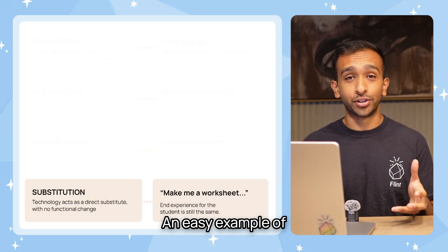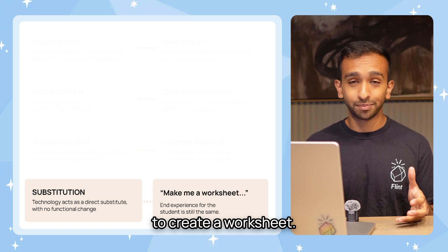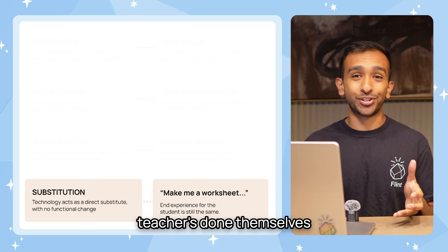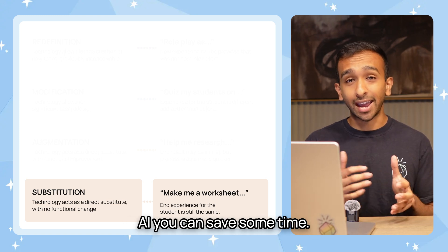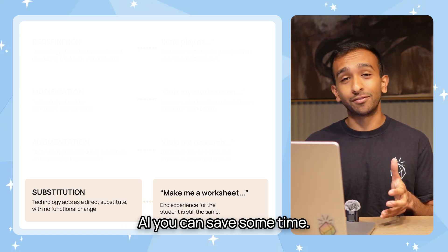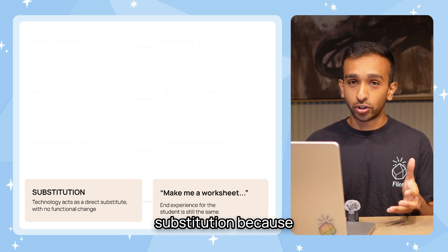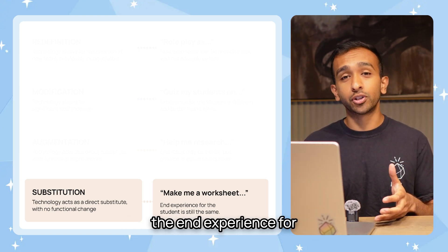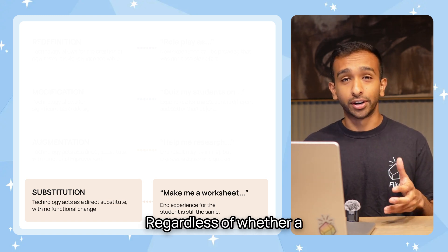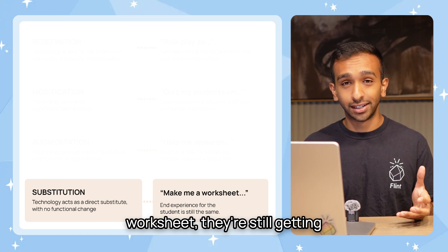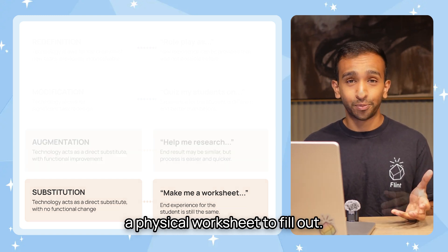An easy example of substitution is using AI to create a worksheet. It's something that every teacher has done themselves manually before, and by using AI, you can save some time. That said, it only falls under substitution because the end experience for students is the same — regardless of whether a teacher or an AI made a worksheet, they're still getting a physical worksheet to fill out.